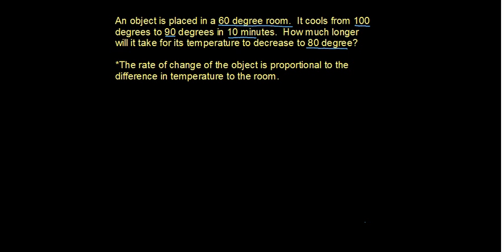To do this problem, we have to draw on one property from physics, Newton's law of cooling, which is right here with the asterisk, which means the rate of change of our object is proportional to the difference in temperature of the room. Remember, proportional means you multiply by some constant k.